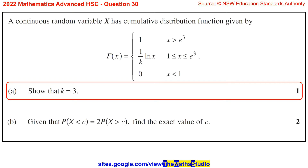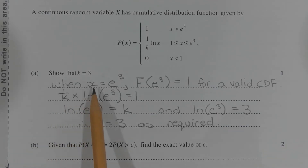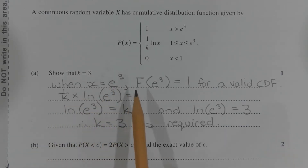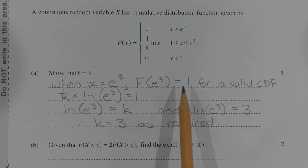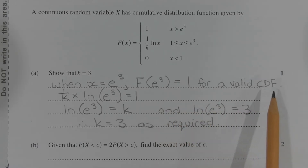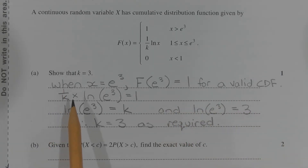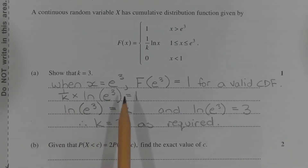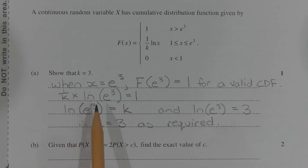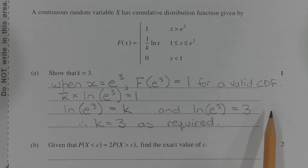Part A: Show that K equals 3. When x equals e to the power of 3, F(e to the power of 3) equals 1 for a valid CDF. Hence, one over K times ln of e to the power of 3 equals 1. Multiplying both sides by K, we have ln of e to the power of 3 equals K. Since ln of e to the power of 3 equals 3, therefore K equals 3 as required.